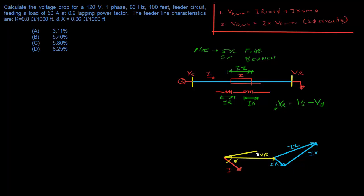The resultant vector gives the sending-end voltage V_S. So V_S is composed of V_R plus I·Z. Your V_S is your V_R plus the drop in the circuit, which gives us: receiving-end voltage equals sending-end voltage minus the voltage drop.